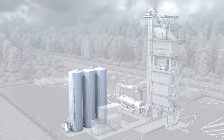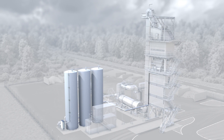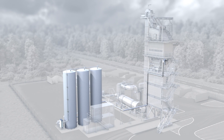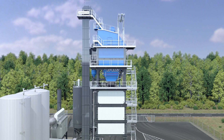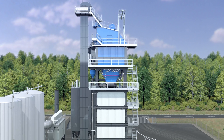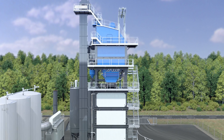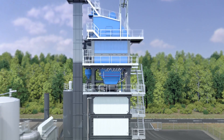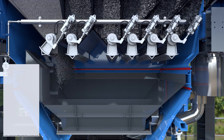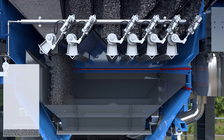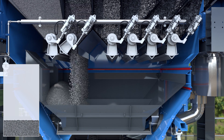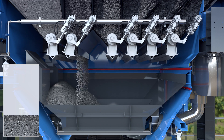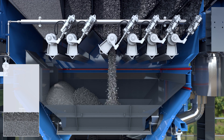The bitumen is now ready. It is transferred through a pipeline to a scale within the mixing section. The complete raw materials are now available and may be weighed and mixed. According to the chosen recipe, the preset mineral amount drops from the hot bin section into the mineral scale.